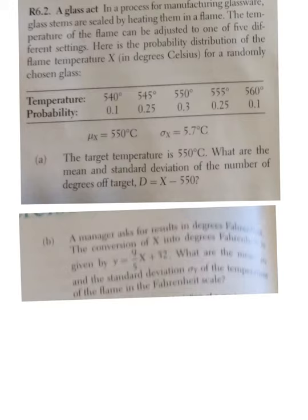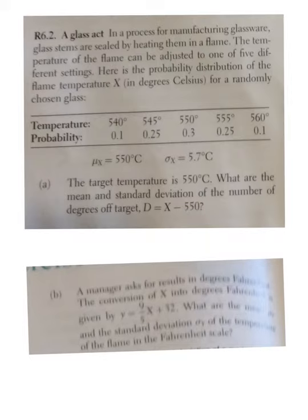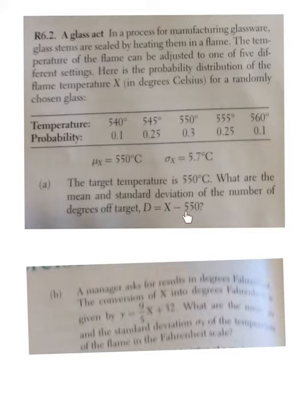Let's do the next question. You are making glassware and you have a flame that can vary in temperature — there are settings on it so it can vary by these 5 different temperatures, and the probability that it's going to be each one of those temperatures is listed here. They have actually done the average and the standard deviation for you, so the average temperature is 550 degrees.